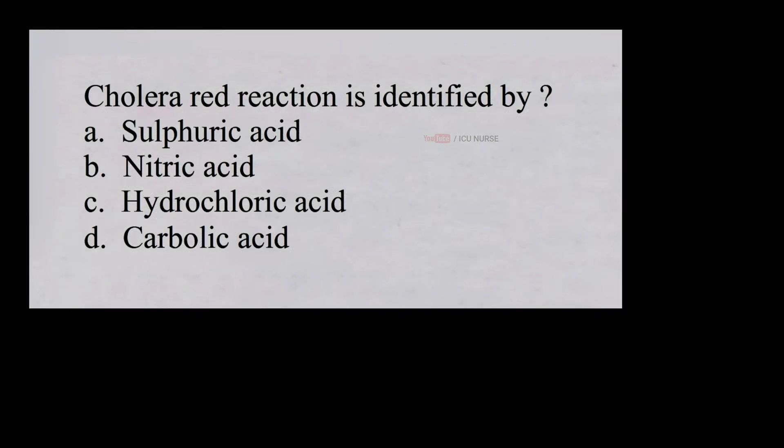Cholera red reaction is identified by: a. Sulfuric acid, b. Nitric acid, c. Hydrochloric acid, d. Carbolic acid. And the correct answer is a. Sulfuric acid.